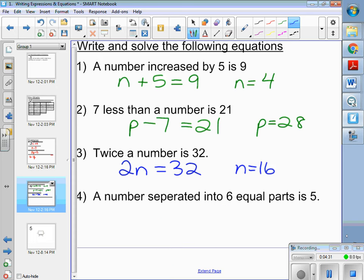A number separated into six equal parts is five. So we have our number, that's a B. Hopefully it looks like that. Separated into six equal parts is equal to five. Well, hopefully you guys know that when you divide 30 by six, you get five.